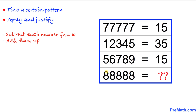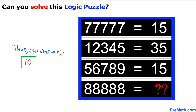Now let's apply this rule to our last row. 10 minus 8 gives us 2, and this repeats five times. Adding them up: 2+2+2+2+2 equals 10. So our answer turns out to be 10. Thanks for watching, and please don't forget to subscribe to my channel for more exciting videos. Bye!